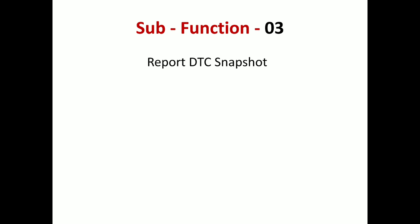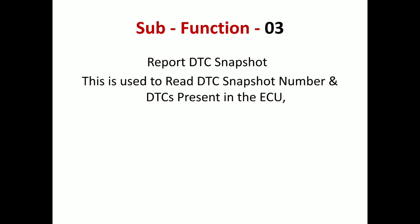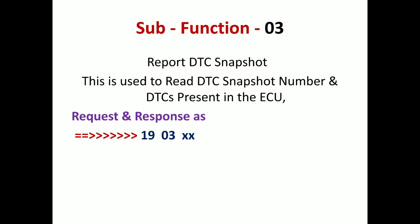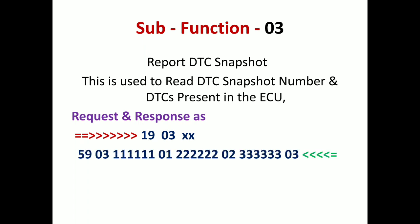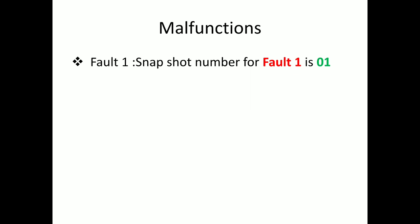The first sub-function is 0x03, which is used to report the DTC snapshot number. It reads the DTC snapshot number and DTC present in the ECU. The request is 1903 and the response is 5903. Before going further, let's have a small discussion on malfunctions — what malfunctions are and how they are numbered.